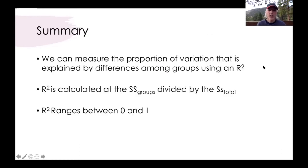In summary, we can measure the proportion of variation that is explained by differences among groups in an ANOVA using something called an R-squared. An R-squared is calculated in this case as the proportion of total sums of squares that's explained by the between group sums of squares.